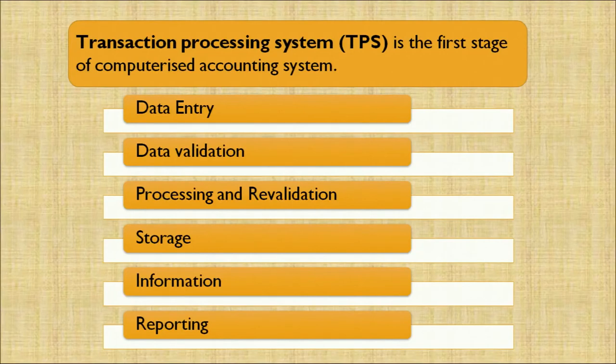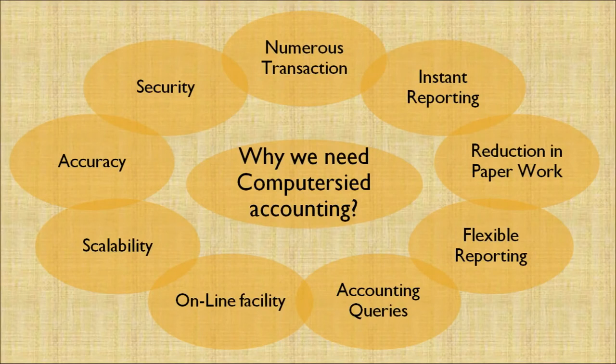There are various types of accounting entry processes which include data entry, data validation, processing and revalidation, storage, information, and reporting — this is called a Transaction Processing System (TPS). The need for computerized accounting arises because of a number of transactions, instant reporting, reduction in paperwork, flexible reporting, accounting queries, online facility, scalability, accuracy, and security.